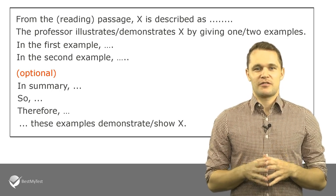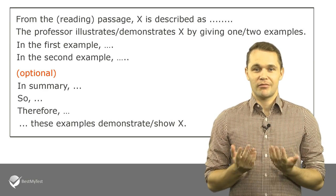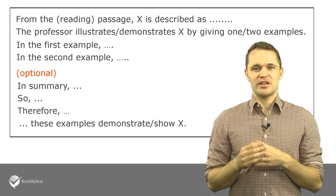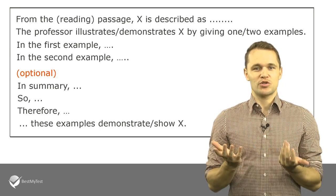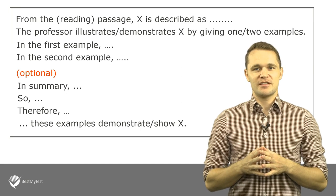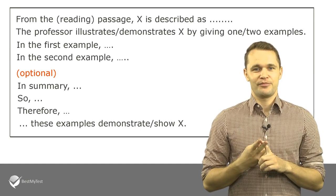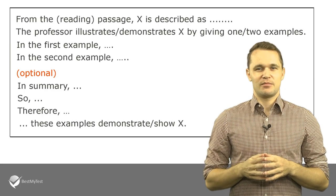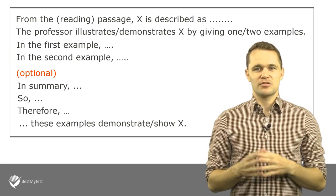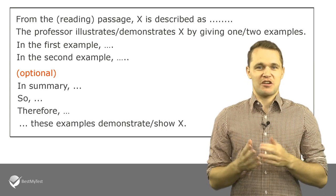You can start with: 'From the reading passage, X is described as...' and then you could continue saying: 'The professor illustrates or demonstrates X by giving one or two examples.' You can then further describe the examples using 'in the first example' and 'in the second example.' If you still have time, you should try to find a conclusive summary. For this, you can use transition words like 'in summary,' 'so,' or 'therefore.'